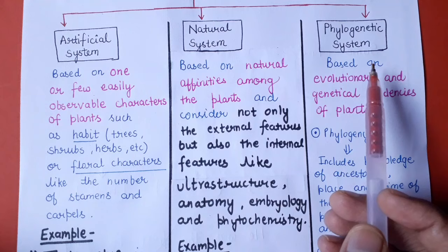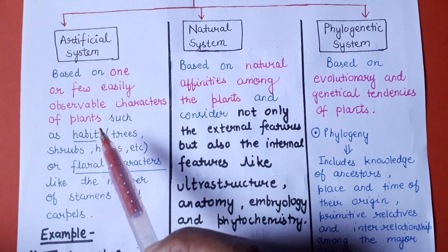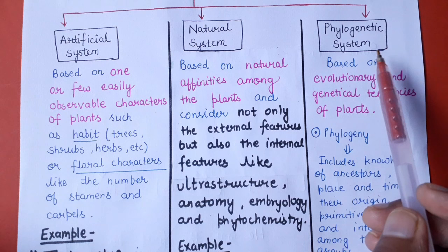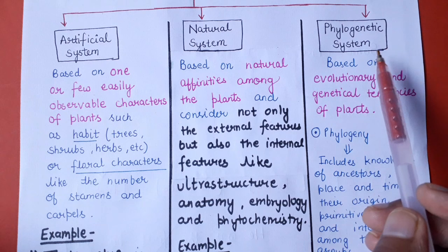So, these are basically the three systems of classification: artificial, natural, and phylogenetic. In the artificial system, plants are classified using two to four easily observable characteristics such as habit or floral characters. The natural system classifies plants based on both external and internal features. And in the phylogenetic system, classification is based on evolutionary and genetic tendencies.